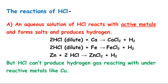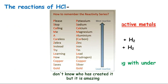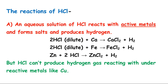Now we look at the reactions of HCl. The aqueous solution of HCl reacts with active metals to form salts and produce hydrogen gas. For example, dilute HCl reacts with calcium to form calcium chloride. According to the activity series, metals placed above hydrogen can replace hydrogen from HCl. Elements below hydrogen, like copper, cannot replace hydrogen, so HCl does not react with copper.